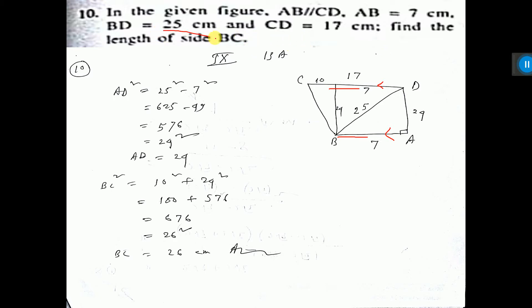BD is 25, see here BD. CD is 17 given. CD, it is 17. Find the length of BC. This length we have to calculate.